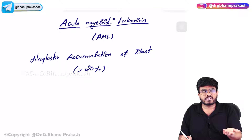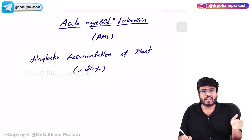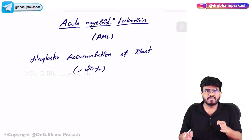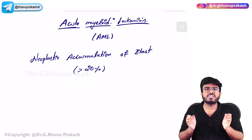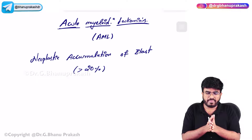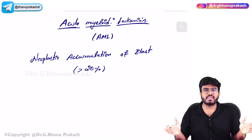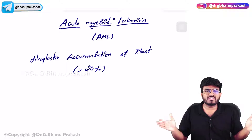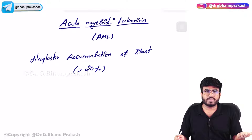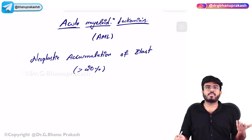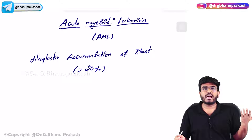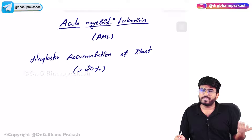What are the consequences? Crowding out. Acute means in a very short time, in a very rapid phase, the bone marrow is getting crowded out, which is going to lead to pancytopenias - anemia, thrombocytopenia, and neutropenia.